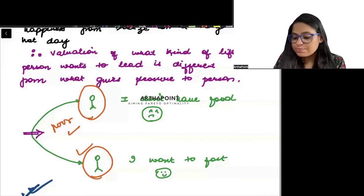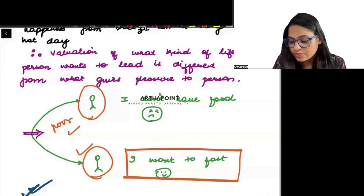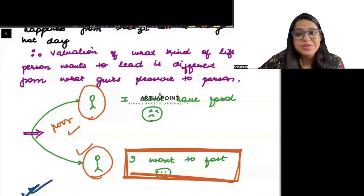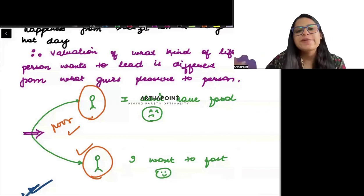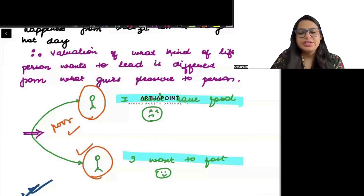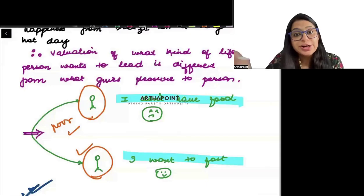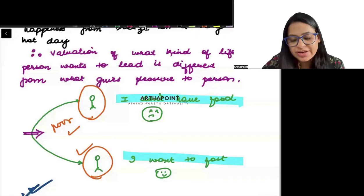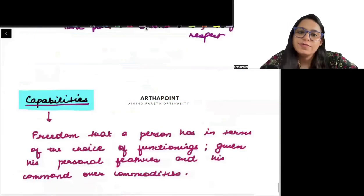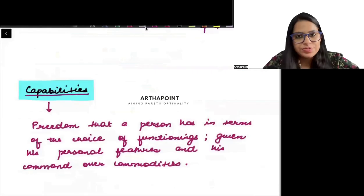Right? This person who is detoxifying, jo fast kar raha hai, is getting pleasure out of this situation, is being happy out of this situation. This is increasing his well-being. And this is decreasing his well-being. Same commodity. Dono ko ek khana nahi mil raha. Different functionings. It is acting differently. So this is what is there that the same commodity can have different functionings. Okay? I hope this is clear to you. Thank you.